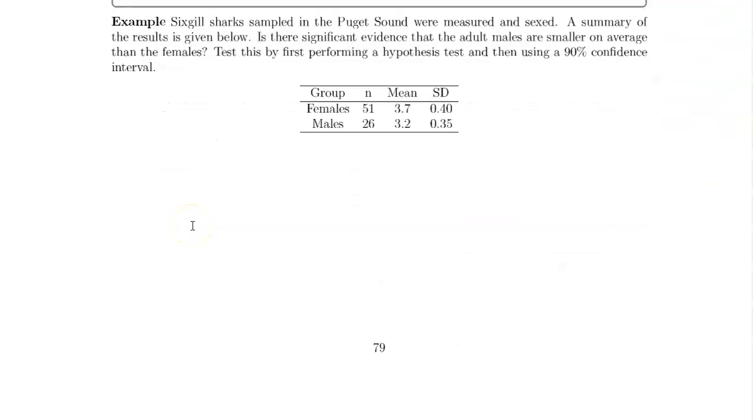Now we have our example. Six gill sharks sampled in the Puget Sound were measured and sexed. A summary of the results is given below. Is there significant evidence that the adult males are smaller on average than the females? Test this by first performing a hypothesis test and then using a 90% confidence interval.